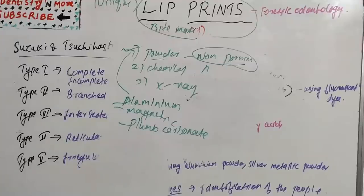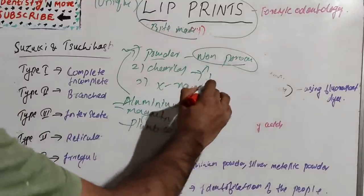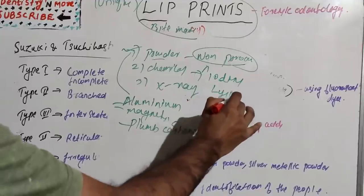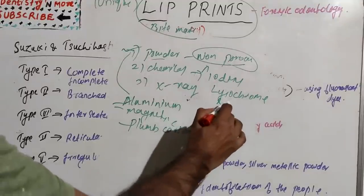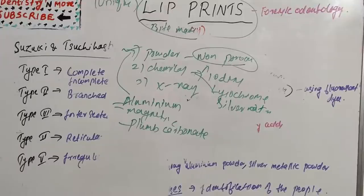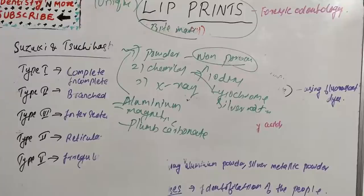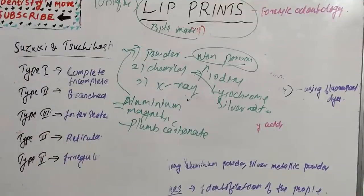The chemical method involves crime scene investigators using chemicals such as iodine fuming, silver nitrate, and lysochrome dyes. When these chemicals come into contact with the lip print residue, the print becomes very visible. Just like the powder method, chemicals make the lip prints visible when they contact the lip print residue.